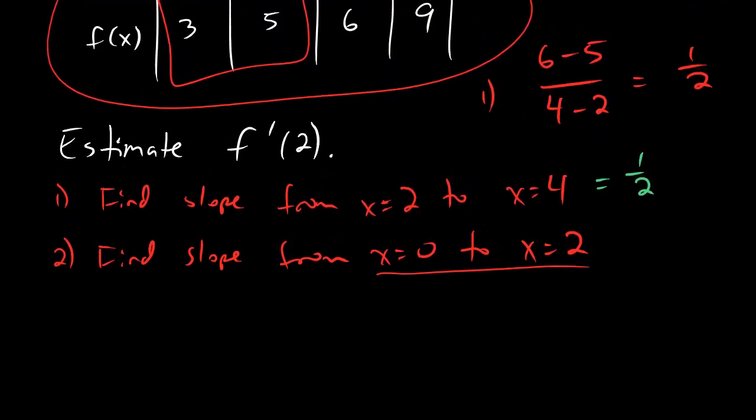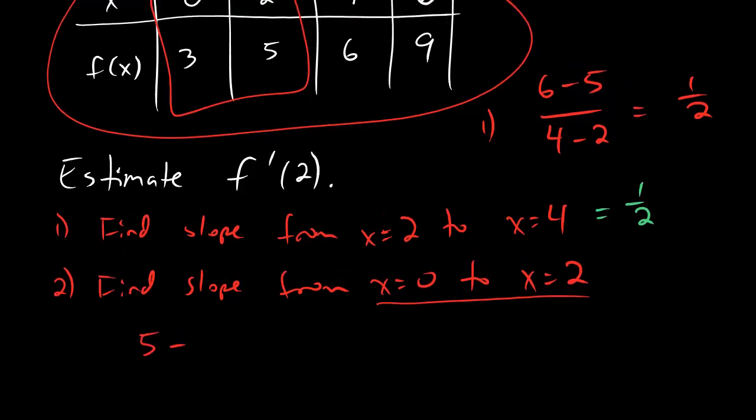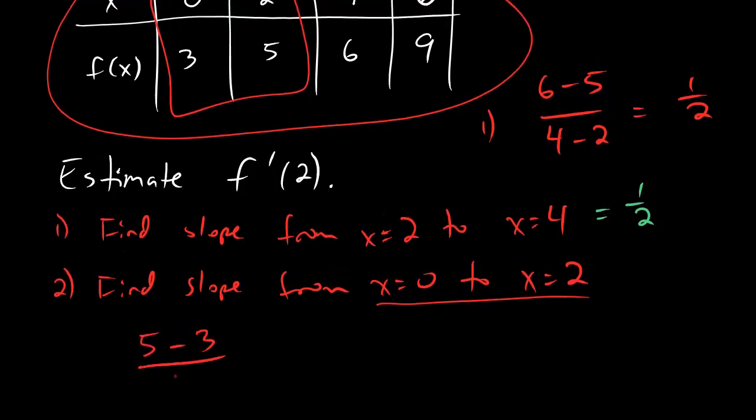The slope from 0 to 2 is going to look like the difference in y values divided by the difference in x values. And from that, we just get 1.